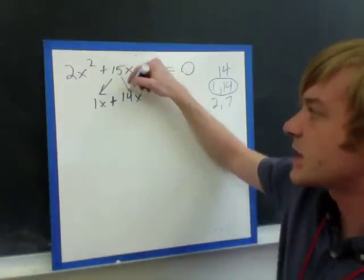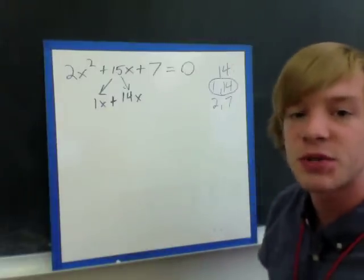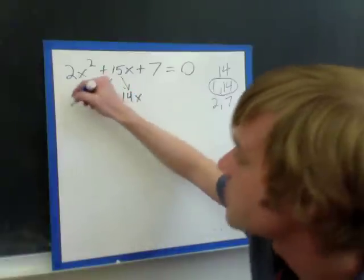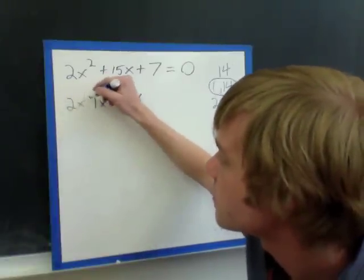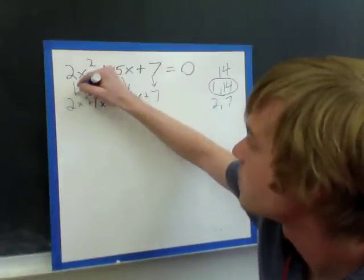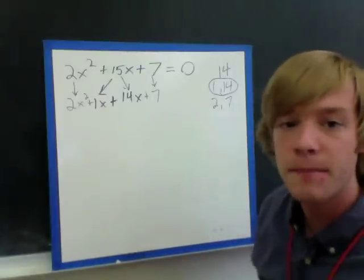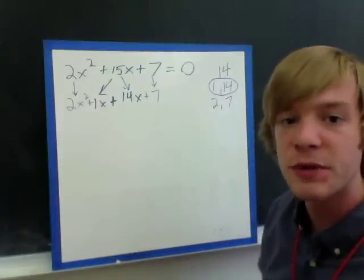So we split up the 15x into 1x plus 14x, and then I'm going to bring down my 2x squared and my 7. Now we pair up in parentheses, just like we've been doing before.